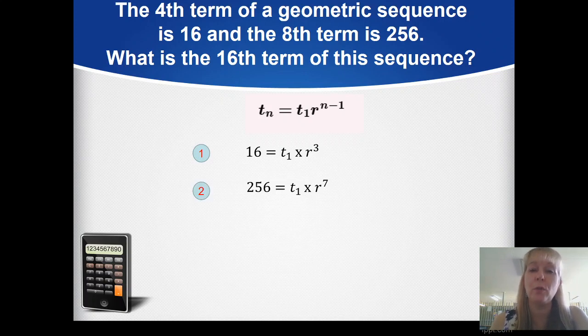We have two unknown variables: t₁ and the common ratio r. Ordinarily, I would use substitution—finding t₁ by doing 16 divided by r³, then substituting into the second equation. But that's nearly impossible with this problem. The best method is elimination. I'm going to divide equation 2 by equation 1. Let's see how that looks.